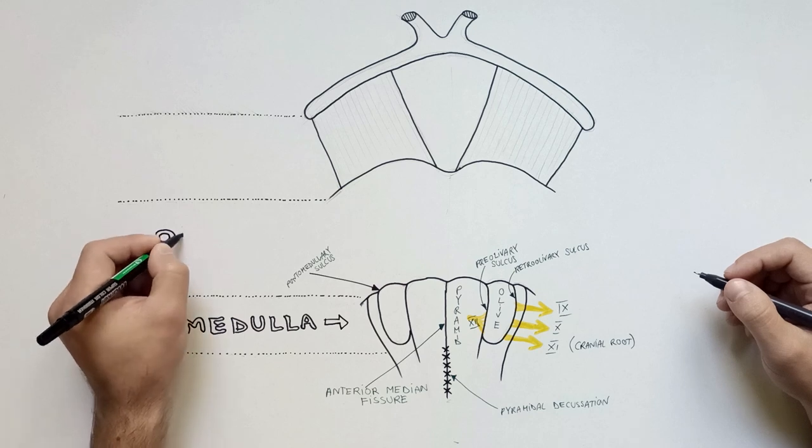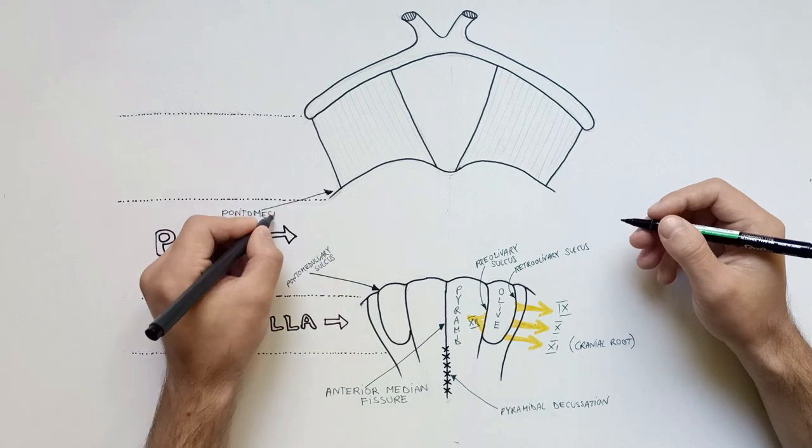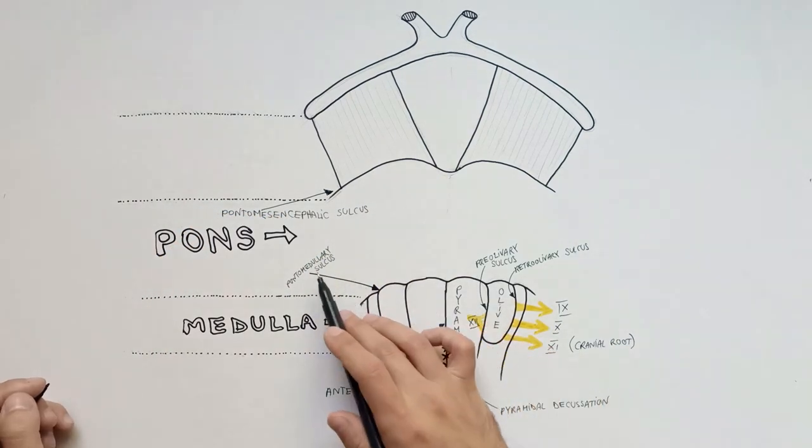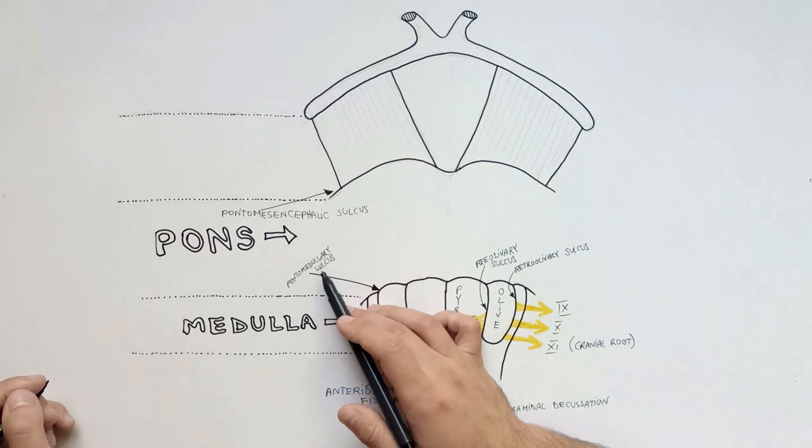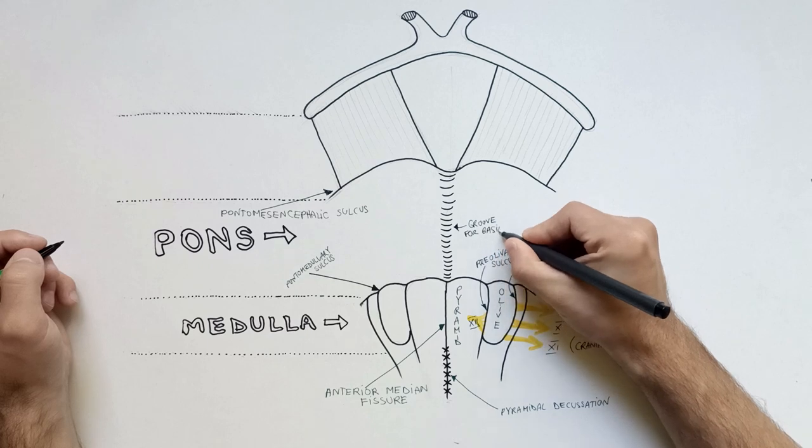The middle portion of the brainstem is represented by the pons, which is bounded superiorly by the pontomesencephalic sulcus and inferiorly by the already indicated pontomedullary sulcus. On the midline the pons features a groove for the basilar artery.